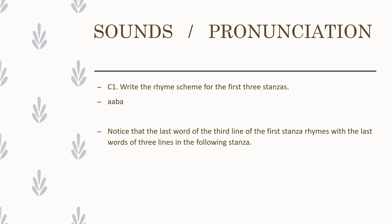For deciding the rhyme scheme you have to look at the last words of each line. The first stanza has: no, though, here, snow. Now 'no' and 'though' rhyme, and they also rhyme with 'snow,' but 'here' is different. So 'no,' 'though,' and 'snow' rhyme with each other and 'here' is the odd one out. The rhyme scheme for the first stanza is A, A, B, A.